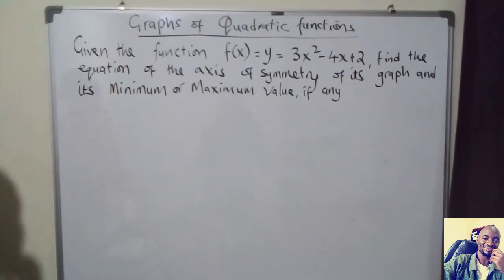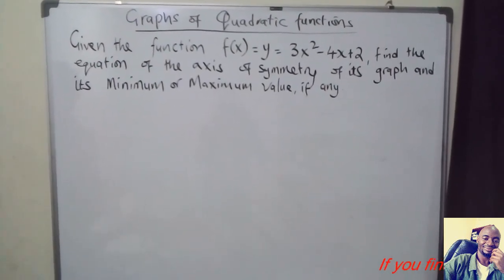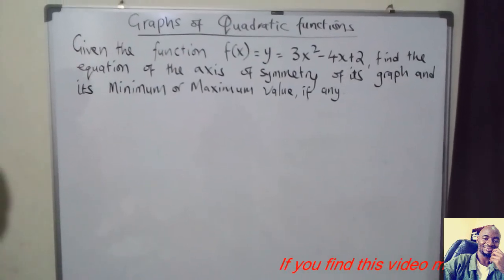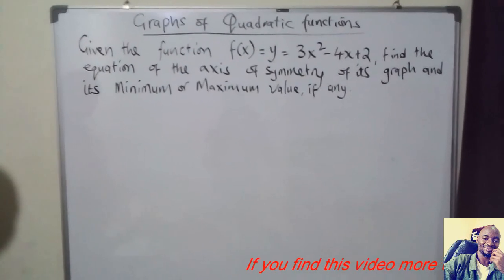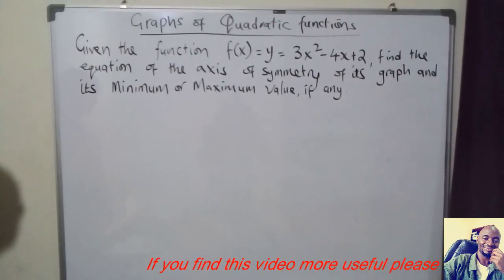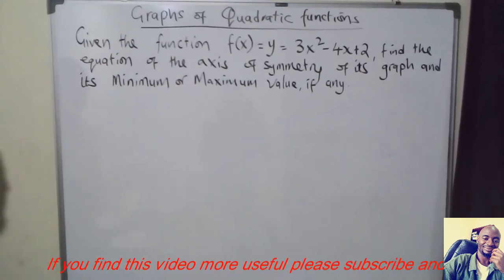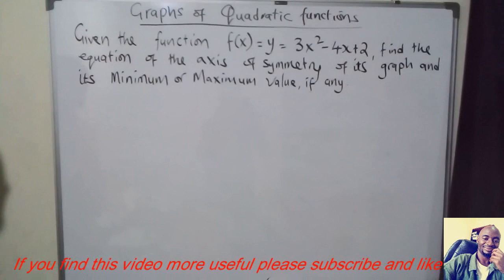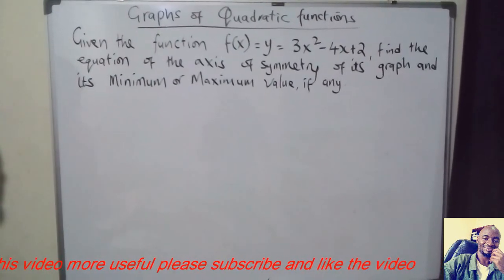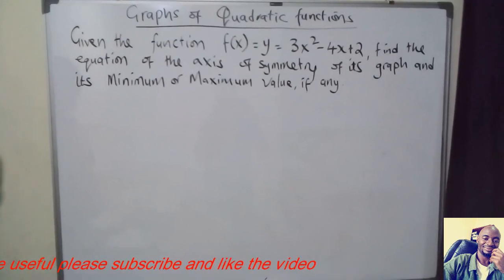Welcome. Today we want to solve this question: given the function f of x, which is y, equal to 3x squared minus 4x plus 2, find the equation of the axis of symmetry of its graph and its minimum or maximum value, if any.